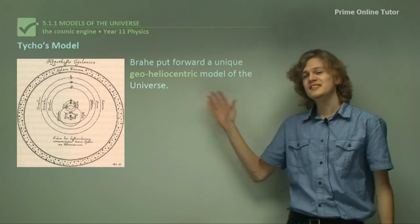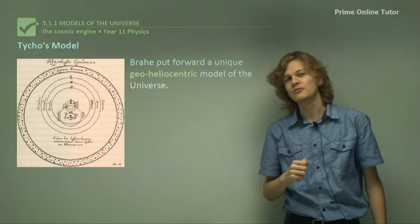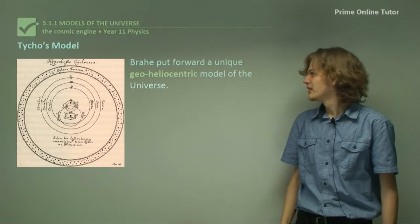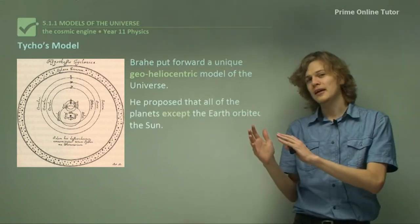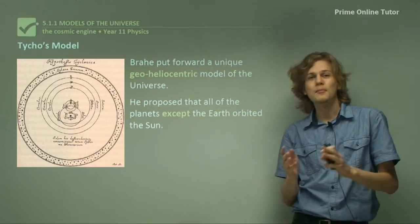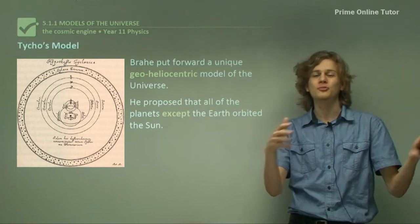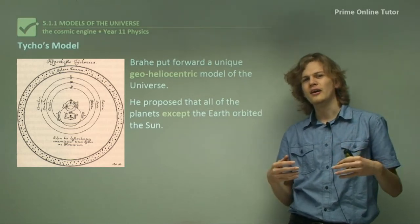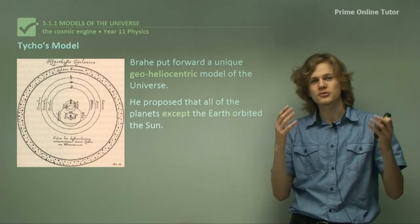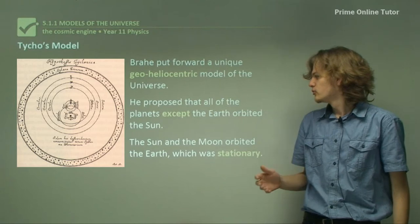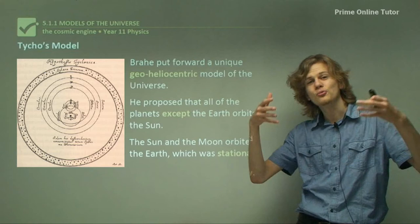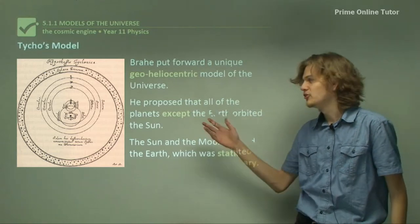All he needed to do was analyze it in order to come up with a good model. Brahe put forward a unique geoheliocentric model of the universe. He proposed that all of the planets, except the Earth, go around the Sun, because the careful observations that he made seemed to indicate that they were going around the Sun. But he couldn't throw away the idea that the Earth was stationary. The Sun and the Moon orbited the Earth, which was consistent with his data, and the Earth was stationary in this model.